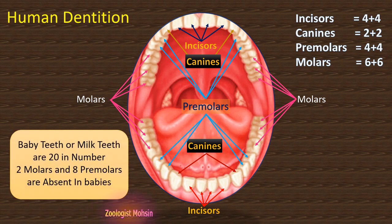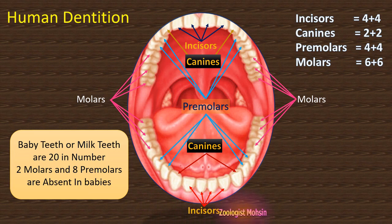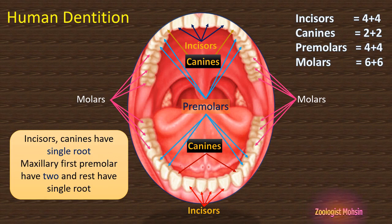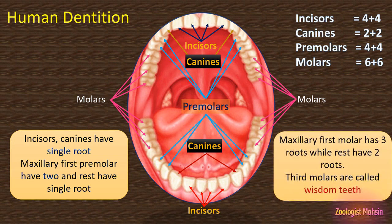Baby teeth, or milk teeth, number 20 in humans. Remember that 2 molars and 8 premolars are absent in babies — those 10 teeth are not present. Secondary dentition completely appears usually at the age of 21. Incisors and canines have a single root, while the maxillary first premolar has 2 roots and the rest have a single root. The maxillary first molar has 3 roots while the rest have 2 roots. Third molars are called wisdom teeth, and wisdom teeth are absent in some humans.